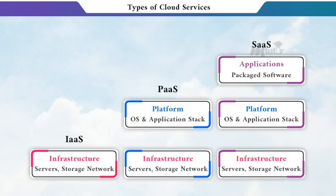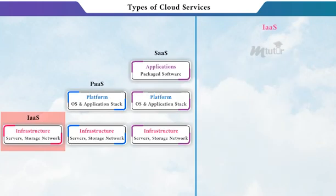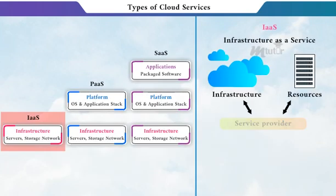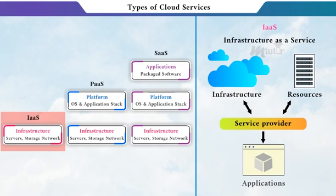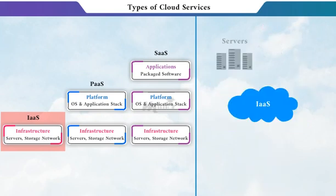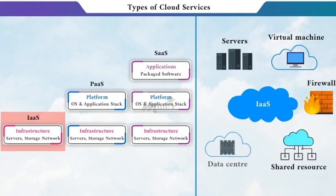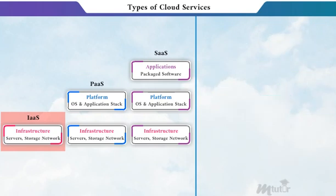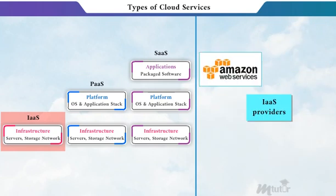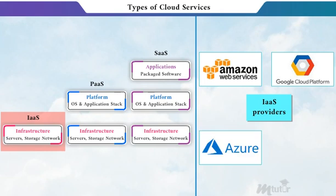The first type of cloud service is Infrastructure as a Service. IaaS rents the infrastructure and resources required to run customized applications, by providing servers, virtual machines, firewalls, shared resources, data centers, and storage to the user. IaaS providers include Amazon Web Services, Google Cloud Platform, Microsoft Azure, Rackspace, and many more.